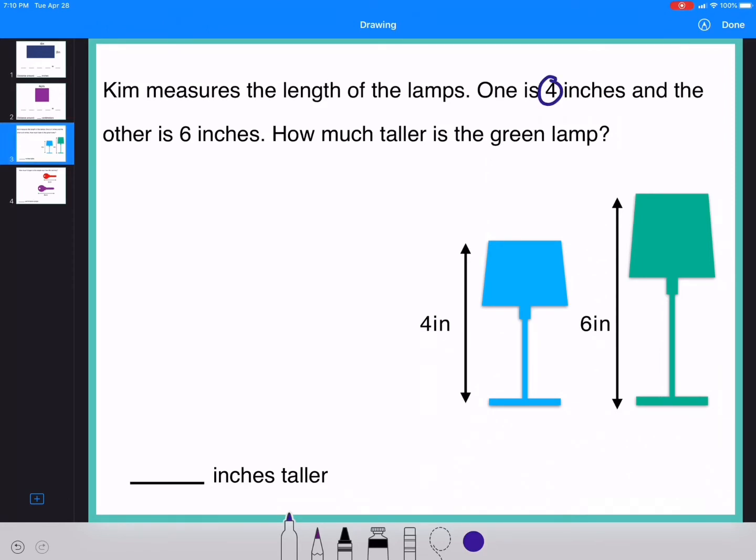I'm going to do my CUBES. Circle the numbers. Underline the question. Box the important words. And solve. So my important words were how much taller. That tells me to subtract.